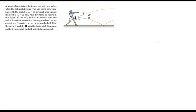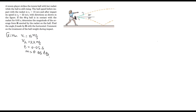The given values are: v1 is 15 meters per second, v2 is 22 meters per second, time is 0.05 seconds, and mass is 60 grams which is 0.06 kilograms. The required parameter is the force R.